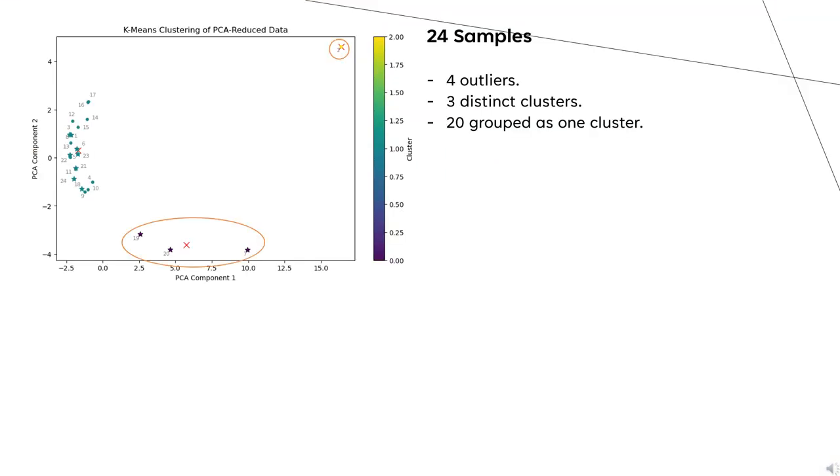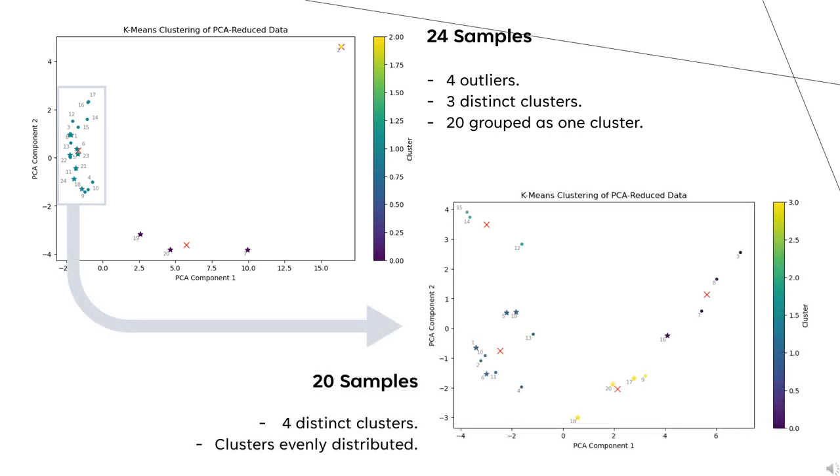Four of our sample points were shown to be outliers throughout our clustering. We are currently investigating why these particular samples are outliers, but to assess the spread of the remaining 20 samples, we have removed the outliers and reapplied our pipeline. As an example, on the left is our PCA and K-means output using 24 samples, and on the right is that using 20 samples.